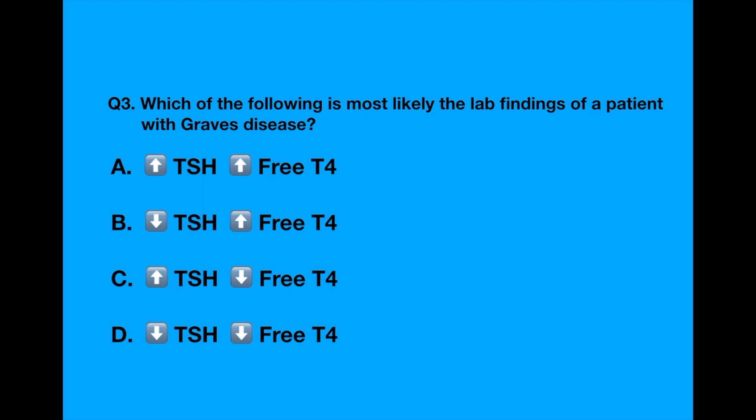Question number three. Which of the following is most likely the lab findings of a patient with Graves disease? Option A, high TSH, high free T4. Option B, low TSH, high free T4. Option C, high TSH, low free T4. Option D, low TSH, low free T4.